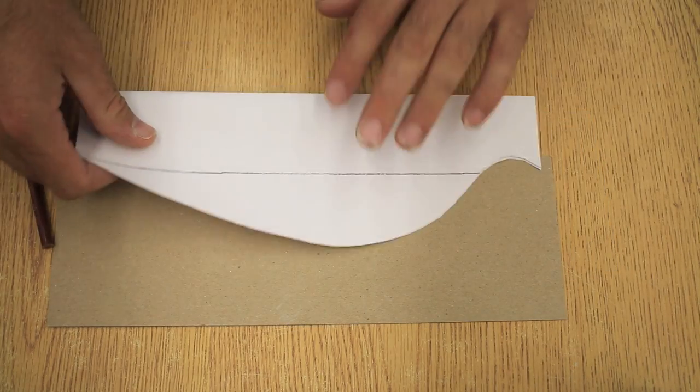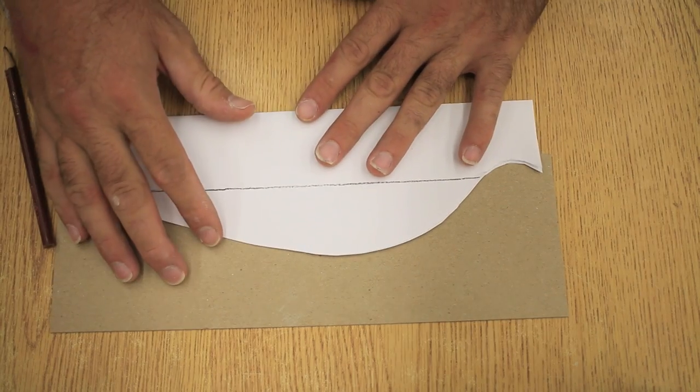Okay. And once you're satisfied with your shape, then you're going to get some of this t-shirt cardboard. They call it t-shirt cardboard because if you ever bought a t-shirt, oftentimes they come wrapped around this. And this is going to give us a nice, stable, strong template.